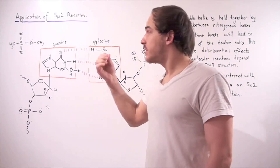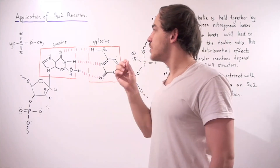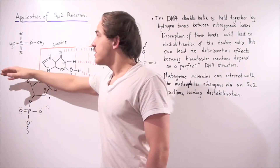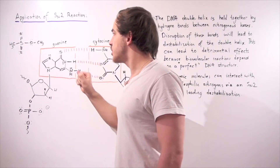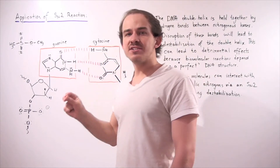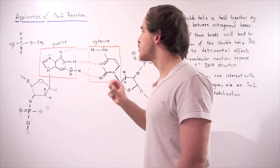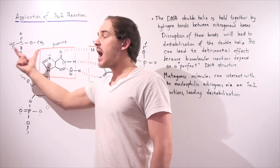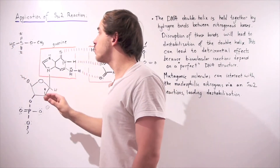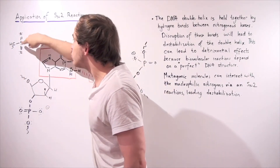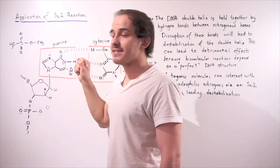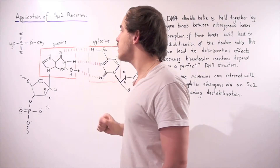Now let's talk about the application of the SN2 reaction — this is known as alkylation. If some type of agent capable of undergoing an SN2 reaction approaches one of these nitrogenous bases, an SN2 reaction can take place. On the substrate, we have a very good leaving group stabilized by resonance, and an R group — in this case CH3, a methyl group.